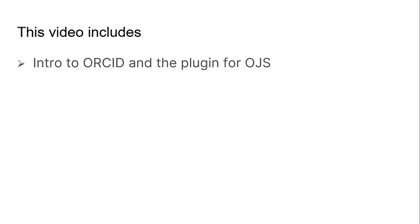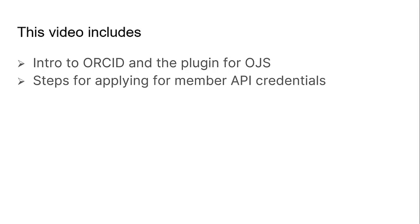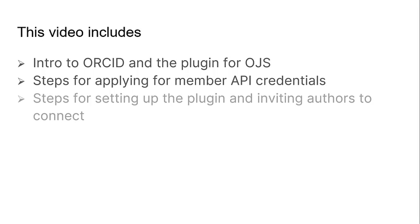This video will cover the following. We'll start with an introduction to ORCID and the ORCID plugin for OJS. Next, we'll look at the steps for applying for ORCID member API credentials. Finally, we'll cover the steps for enabling and setting up the ORCID plugin in OJS and inviting authors to connect their ORCID profile with their published work in a journal. Please note that this video will focus on Open Journal Systems and how to set up and use the plugin in OJS.